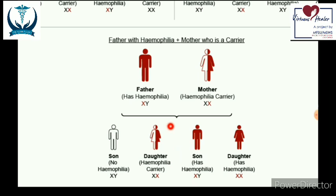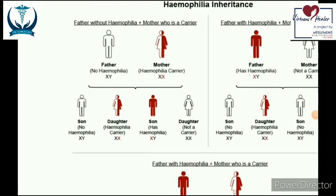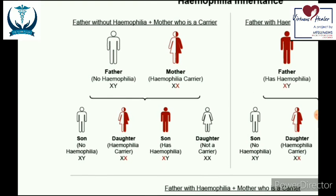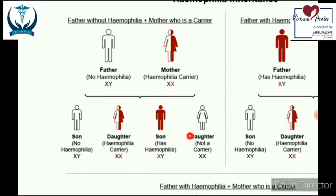When a carrier woman marries a normal man: the man contributes a normal X to all daughters, so daughters can never phenotypically express the disease — they will either be normal or carriers. Sons have a 50% chance of getting the disease because the carrier mother may give either her mutated or healthy X chromosome.